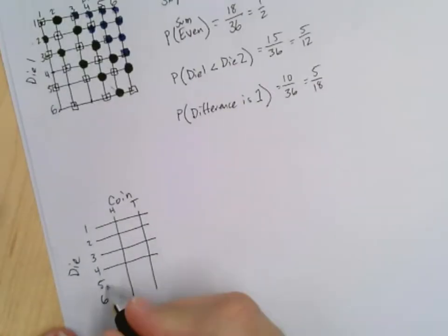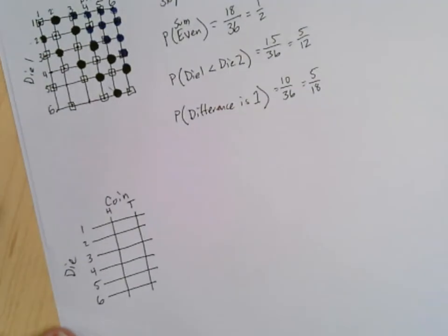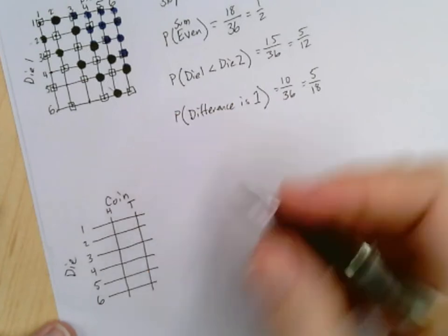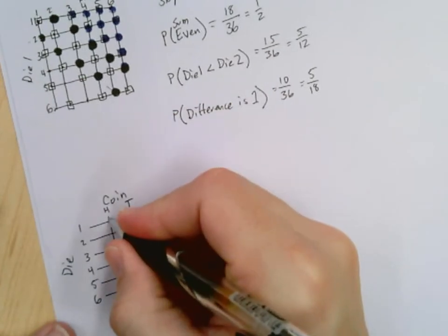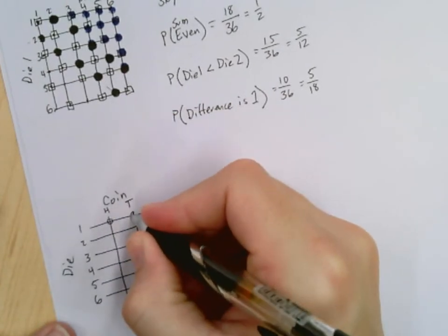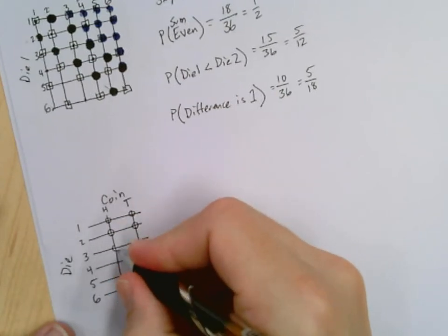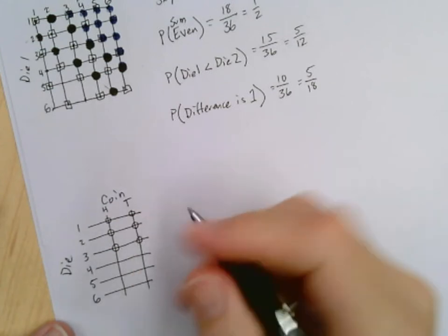In fact, this one won't be a square. But again, your sample space, the different possible outcomes are the things where they intersect. So you can get a one and a heads, you can get a one and a tails, you can get a two and a heads, you can get a two and a tails, you can get a three and a heads, you can get a three and a tails.